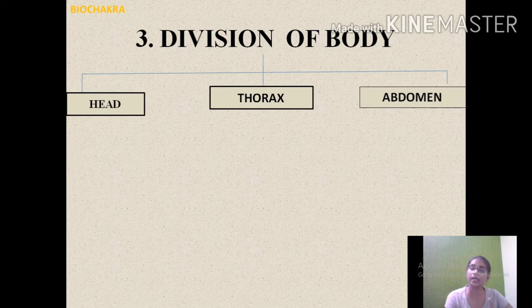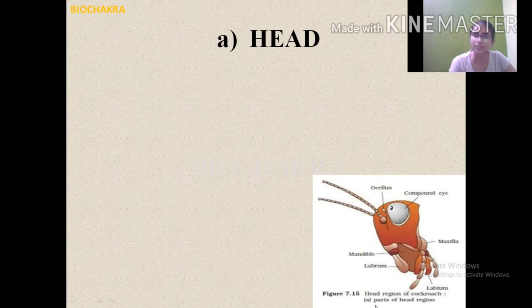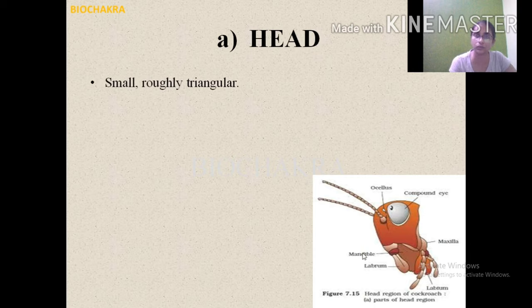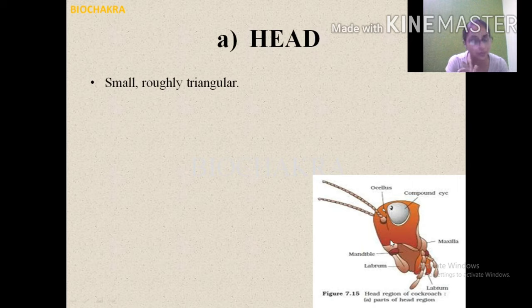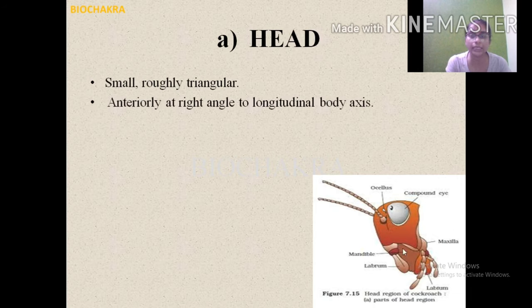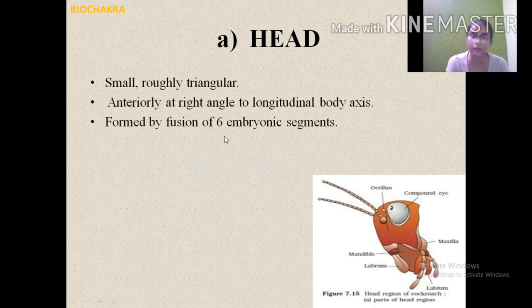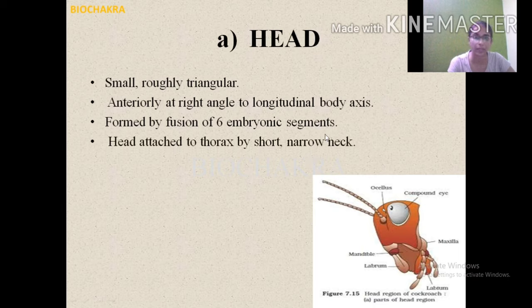Now we will study the head region. The head is small and roughly triangular. It is positioned at right angles (90 degrees) to the longitudinal body axis. The head is formed by the fusion of 6 embryonic segments. The head region is attached to the thorax with the help of a narrow neck, which is supported by sclerites.